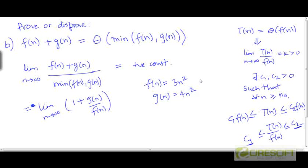But what if g is 4n cubed and f is 3n squared? Now g has a larger rate of growth than f. If you are adding two functions such that one has a larger rate of growth than the other, then for large enough values of n, the relative contribution of the smaller function to the sum tends towards zero. So g over f here is going to grow in an unbounded way, and the ratio is going to tend towards infinity for this particular example.